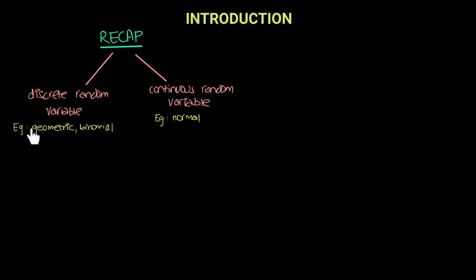For the geometric random variable, we were looking at the number of trials needed to reach a success — so we needed either 1 trial, 2 trials, 3 trials, and so on. These were all discrete values.